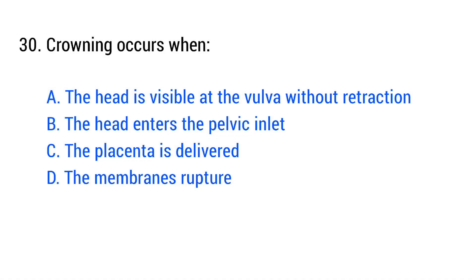Question number thirty. Crowning occurs when? The right answer is option A: The head is visible at the vulva without retraction.